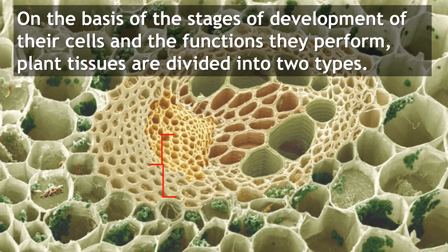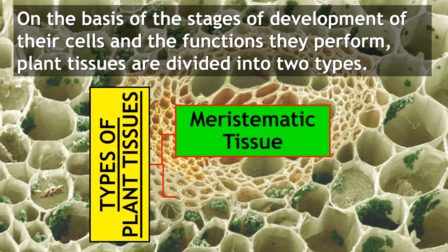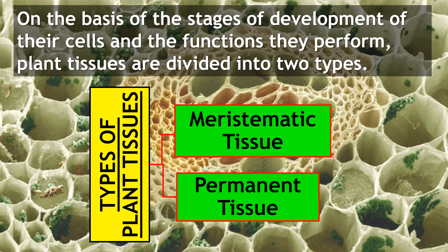On the basis of the stages of development of their cells and the functions they perform, plant tissues are divided into two types: meristematic tissue and permanent tissue.